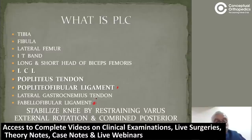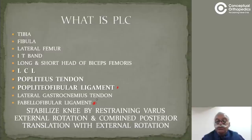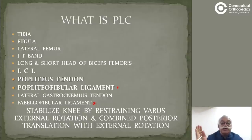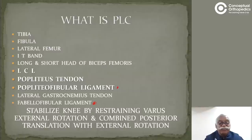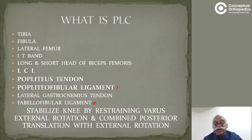All these structures stabilize the knee by restraining varus. Since they are all on the lateral side of the knee, they prevent the knee from going into varus. They also prevent external rotation. The popliteus tendon primarily acts as an internal rotator of the tibia. Primarily, these structures stabilize the knee by restraining varus.